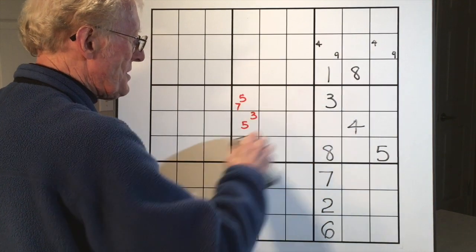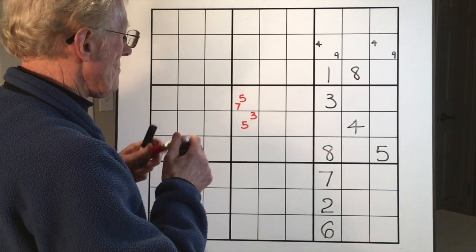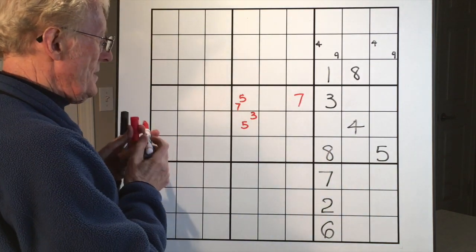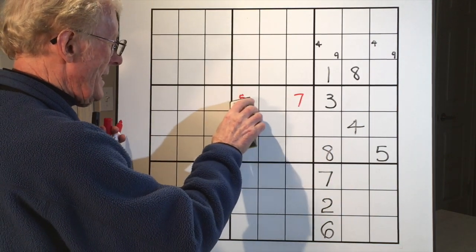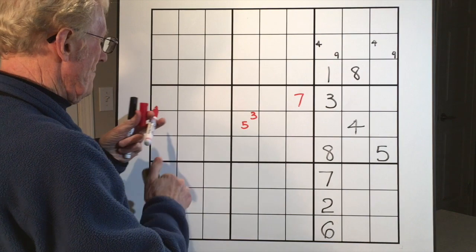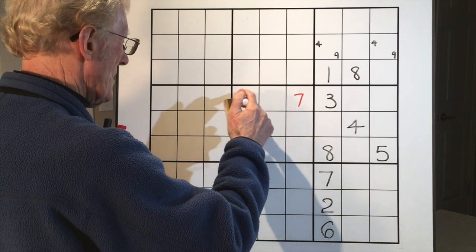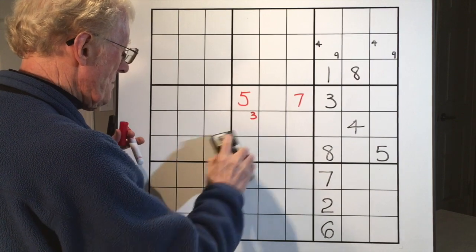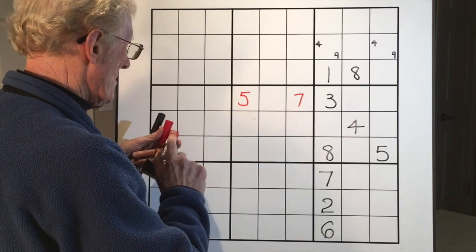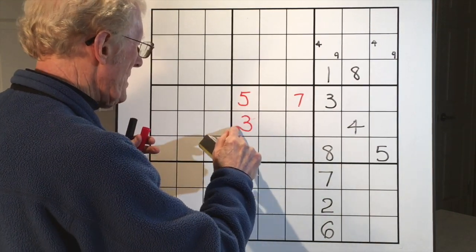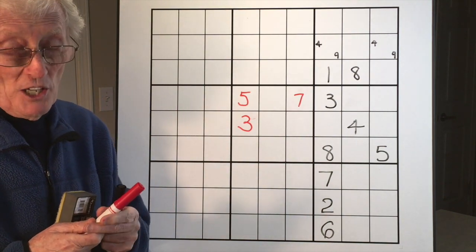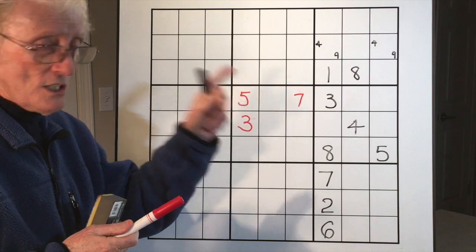And therefore this becomes a seven. So we have a seven. Because that seven is there, this seven is eliminated, this becomes a five. And because that five is eliminated, this becomes a three. Now this is a very common scenario when you have a three by three where there's two numbers in each cell of the three cells.